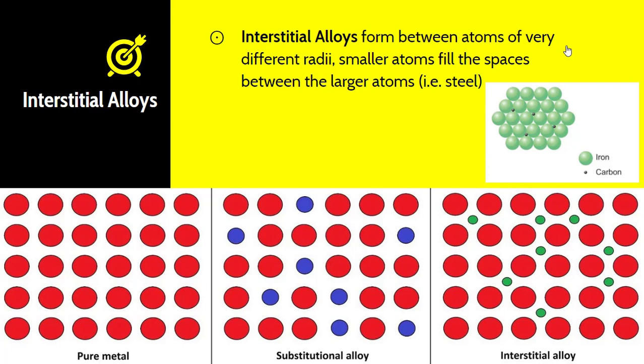There are two types of alloys that are formed, and alloys are just a combination of two or more metals. The first one is what's called an interstitial alloy, and these form between atoms of very different radii. Smaller atoms fill the spaces between the larger atoms. So an example would be iron and carbon, which make up steel. This forms an interstitial alloy. There's no substitution of the iron atoms on the outside, but carbon atoms fill the spaces in between. Carbon atoms can do this because their atomic radius is smaller than that of iron.